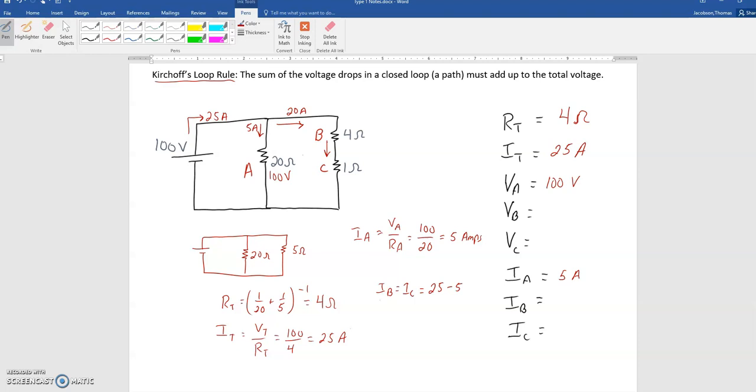So there's not even really a formula for that. You should just know that as a concept. So the remaining amps that I'll put right here go to B and C. So that means B gets 20 amps and C also gets 20 amps.